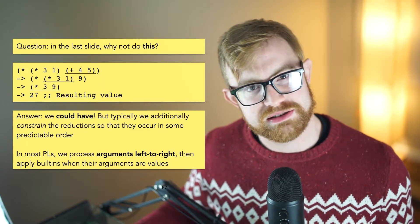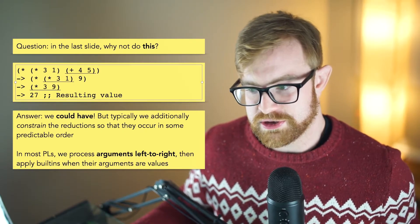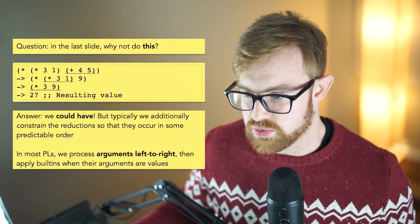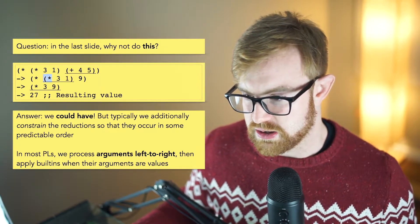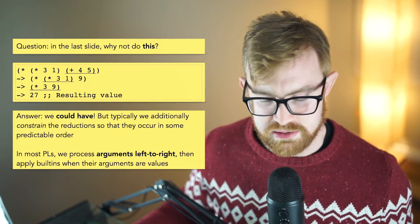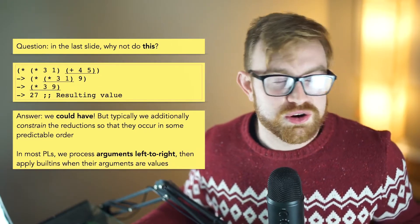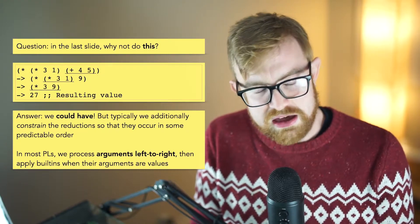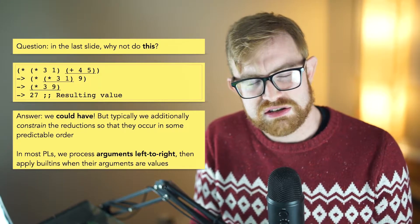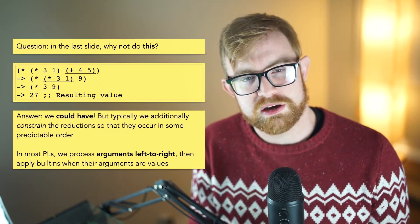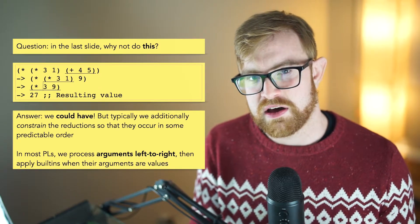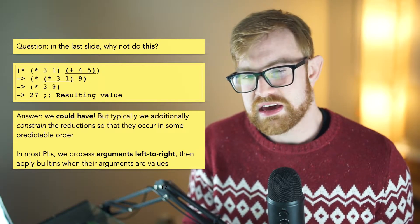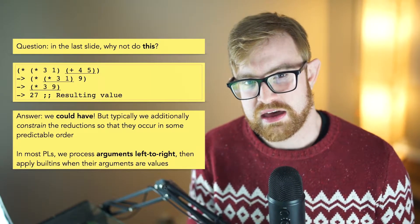So in our last slide, why didn't we do this reduction sequence instead, where we started with 4 plus 5, then reduced 3 times 1, then did 3 times 9? Well, we actually could have. Making some deterministic order to the reduction sequence is something that typically a programming language will do because we don't really want to leave undefined the order in which arguments get evaluated. But in this case, there's actually nothing that stops us from doing that.